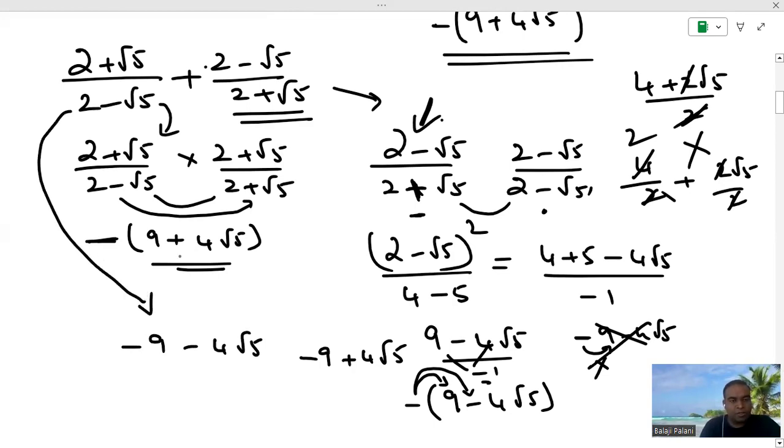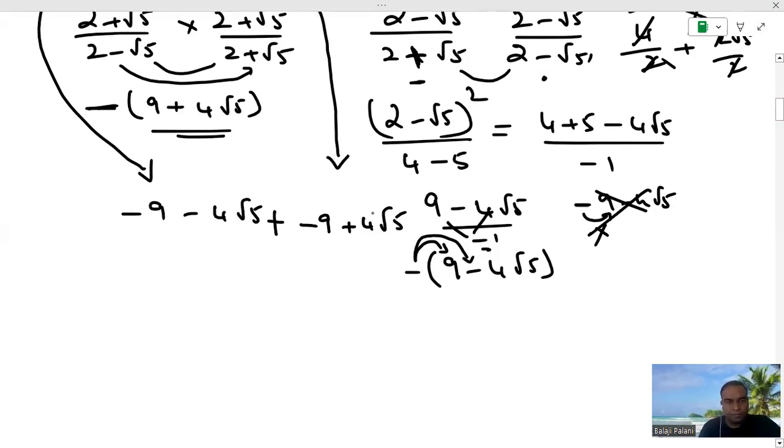It is our first term in the simplest form. Second fraction in the simplest form. And there is a plus sign in between. So, you are going to add both the simplified fractions. That when you know minus a number plus the same number, it will get cancelled. Opposite sign. So, the final answer is minus 18.